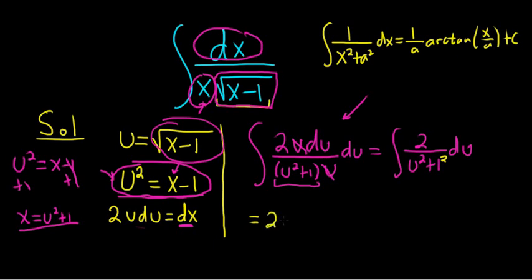So here it's 1 squared. The 2 just hangs out, so it's 2 times 1 over 1, arctangent of u over 1 plus c.